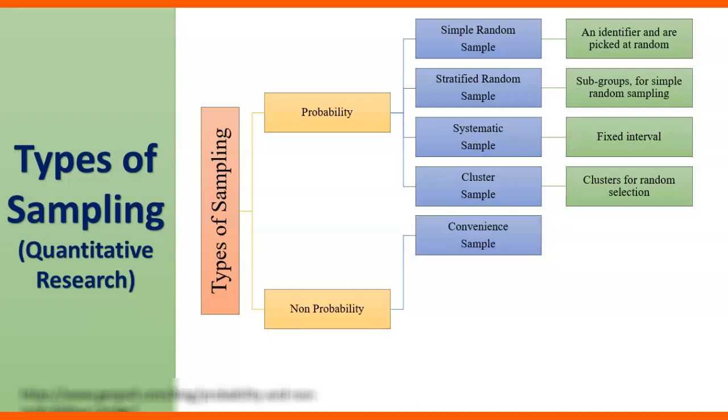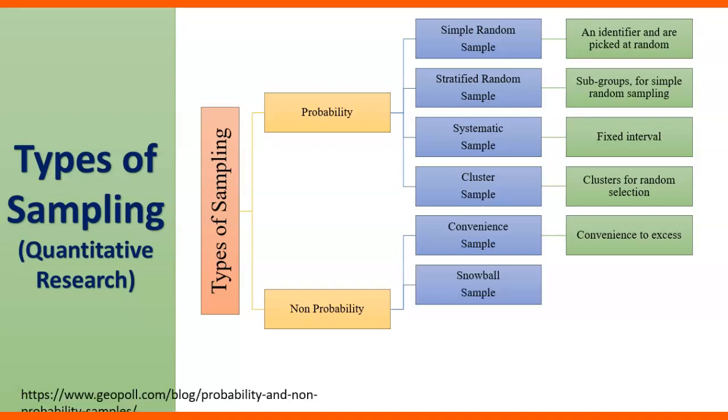Non-probability. It is convenient sampling. You will do having in mind convenience to access, like respondents which are very closer to you and easily accessible. Snowball sample, recruiting some members who in turn recruit others. So a person and he knows another person and another person. So this is snowball sample.